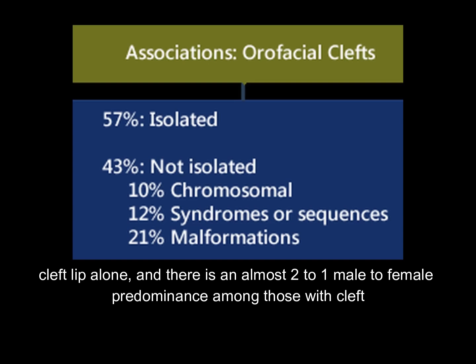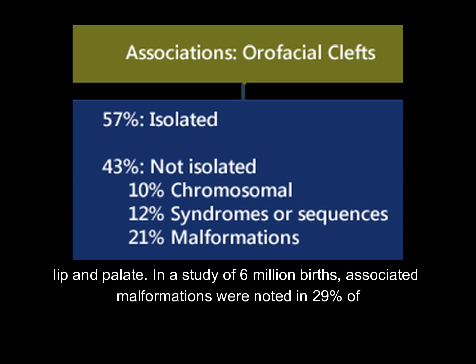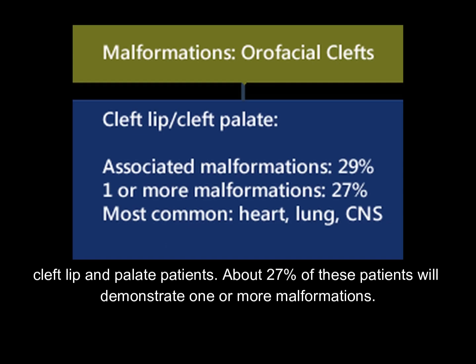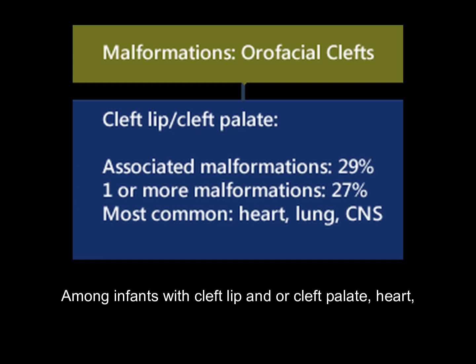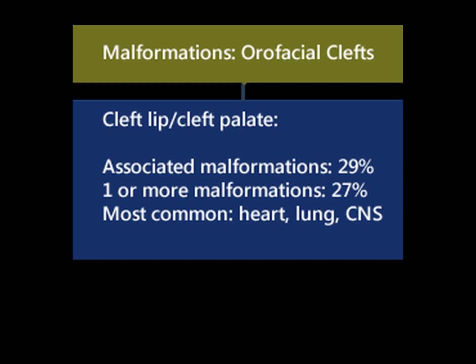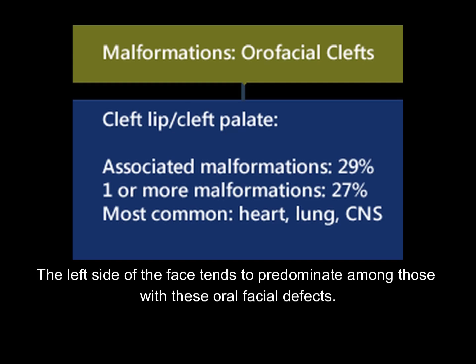In one study of 101 facial clefts, 57% were isolated with no other abnormalities. Among the 43% associated with another abnormality, 10% were associated with chromosomal aberrations, 12% with syndromes or sequences, and 21% with structural malformations only. Associated malformations are more common in cleft lip with palate than with cleft lip alone, and there is an almost 2-to-1 male-to-female predominance among those with cleft lip and palate. Heart, limb, and central nervous system are the most common anomalies.